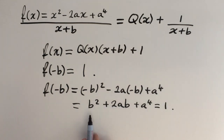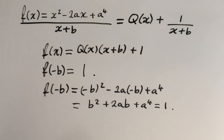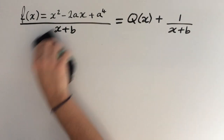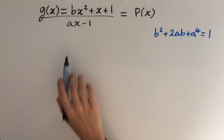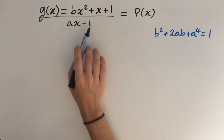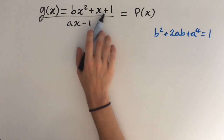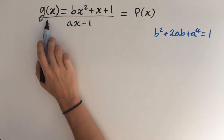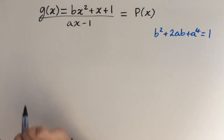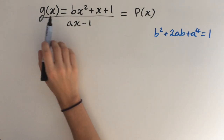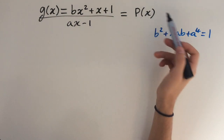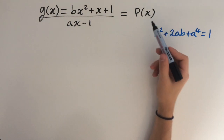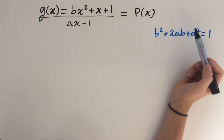So we can simplify this as b squared plus 2ab plus a to the fourth, and we know this equals 1. This is one of the two equations we'll be using later on to solve for the values of a and b. Also, from the question, we're given that ax minus 1 is a factor of this polynomial, which I've called g of x.